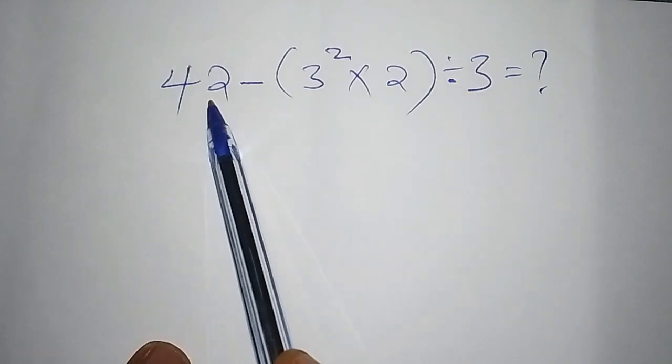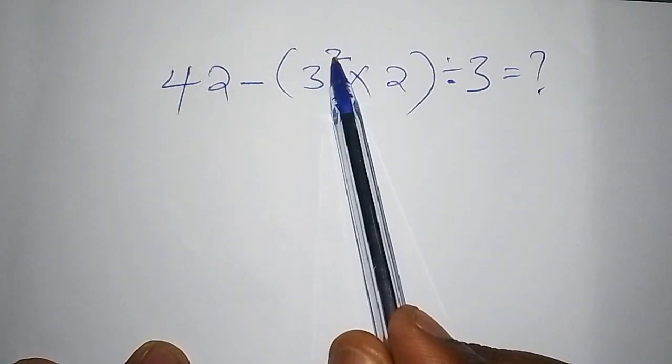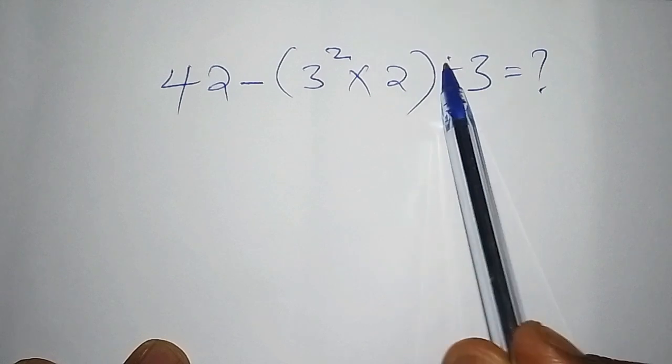For an example, we have 42 minus 3 squared multiply by 2 all of them into bracket divide by 3.